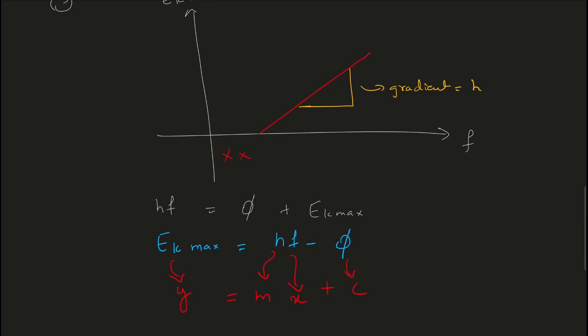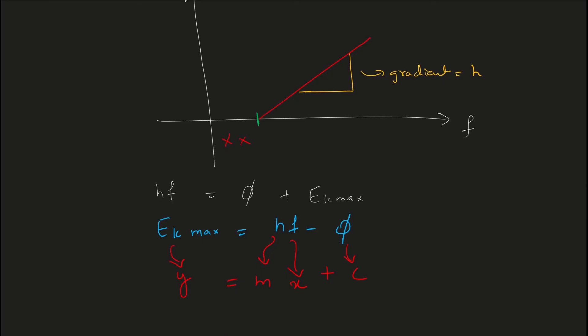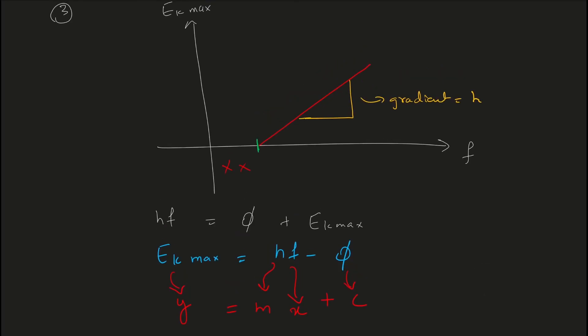The x-intercept of this graph also has significance. The x-intercept is the value of frequency when KE_max equals zero — meaning the electron is just barely released. That value of frequency is called the threshold frequency. So the x-intercept on the KE_max vs. frequency graph gives you the threshold frequency of the photon required to release electrons from the metal plate.